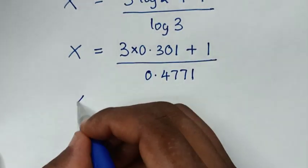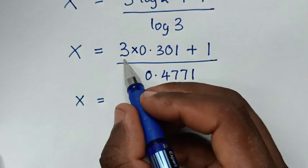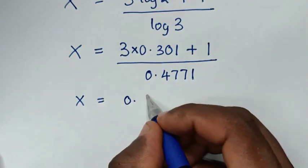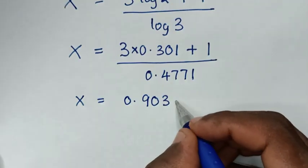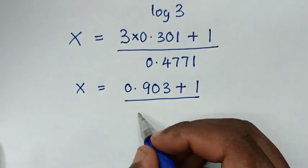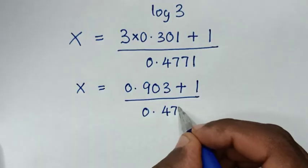Then it will be x is equal to 3 times 0.301, which is 0.903, then plus 1 over 0.4771.